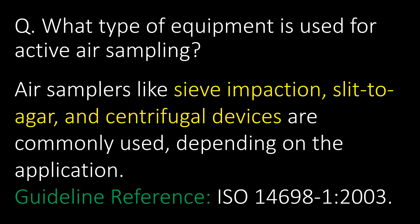What type of equipment is used for active air sampling? Air samplers like sieve impaction, slit-to-agar, and centrifugal devices are commonly used depending on the application. Guideline reference: ISO 14698.